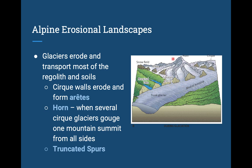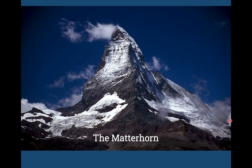The Matterhorn is the most famous example of a horn. Going back to the Alps — the actual Matterhorn fascinated Europeans who wanted to climb it because it was so ferocious-looking. The reason it looks so intimidating is because of multiple circ glaciers that sharpened it from all sides, making it pointy. You can see the sharp arêtes radiating out from it. That's a horn — a mountain sharpened by surrounding cirque glaciers.